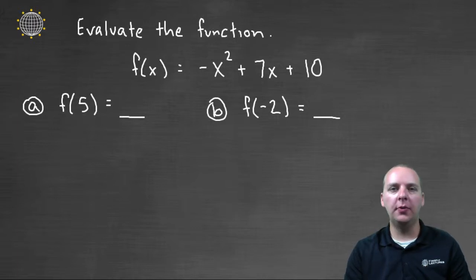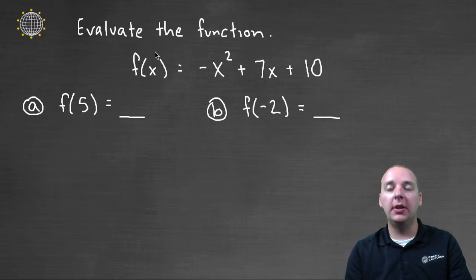Let's practice evaluating a couple of quadratic functions. Here's our first function, we have negative x squared plus seven x plus ten. The first example we want to evaluate f of five. And so what that means is everywhere that you have an x, we're going to replace it with a five. So I see an x here and here.